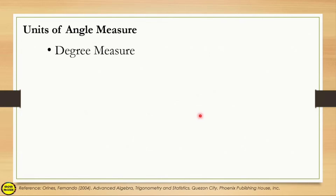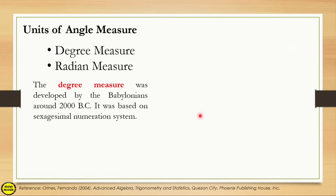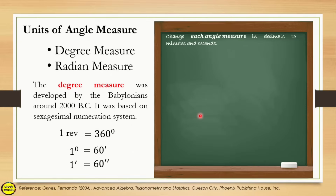In units of angle measure, there are two: the degree measure and the radian measure. The degree measure was developed by the Babylonians around 2000 BC, based on the sexagesimal numeration system. In this system, one complete rotation of a ray equals 360 degrees. Each degree is equal to 60 minutes, and one minute is equal to 60 seconds. Let's try to convert angle measures in decimals to degrees, minutes, and seconds.